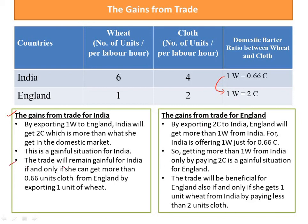The trade will remain gainful for India if and only if she can get more than 0.66 units of cloth from England by exporting one unit of wheat. As for England, by exporting two units of cloth to India, England will get more than one unit of wheat from India, because India offers one unit of wheat for just 0.66 units of cloth. So getting more than one unit of wheat by paying two units of cloth is a gainful situation for England, since domestically England would have got only one unit of wheat for two units of cloth. The trade will be beneficial for England if and only if she gets one unit of wheat from India by paying less than two units of cloth.